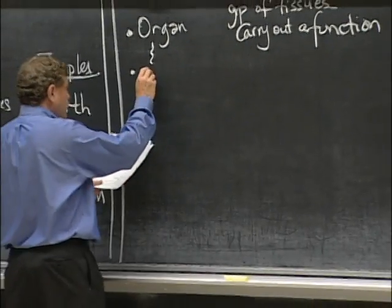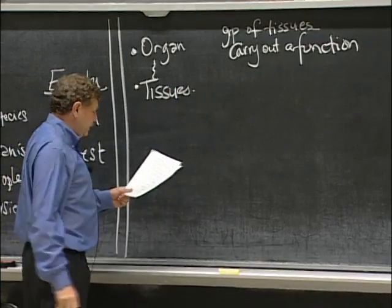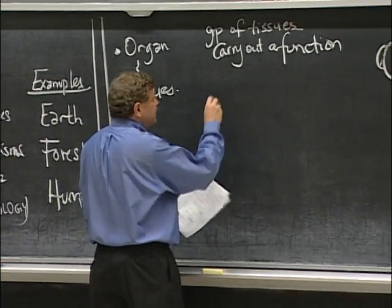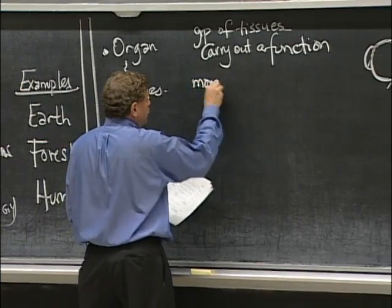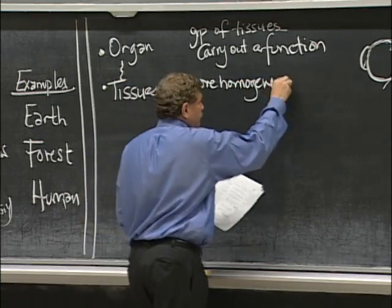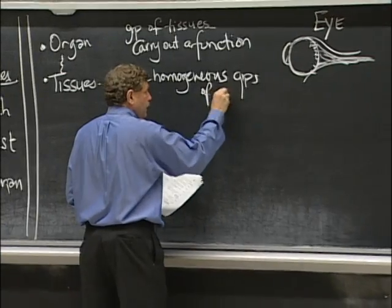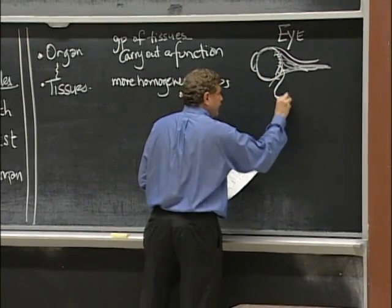All these tissues working together to provide vision. Going down one level below that, we have tissues. These are more homogeneous groups of cells. So we could have, say, the retina.